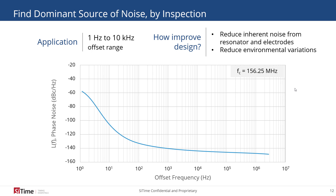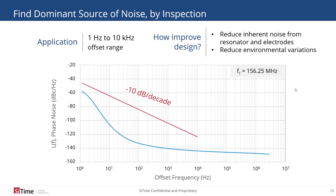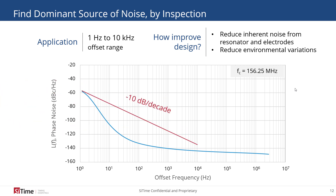If we look at a third application-oscillator combination, which is concerned with a frequency range between 1 Hz and 10 kHz, we can follow the same analysis and show that for this system the close-in phase noise dominates. Therefore the resonator-oscillator circuit combination with the environment is the dominant noise process that would need to be minimized in order to lower the overall phase jitter number.